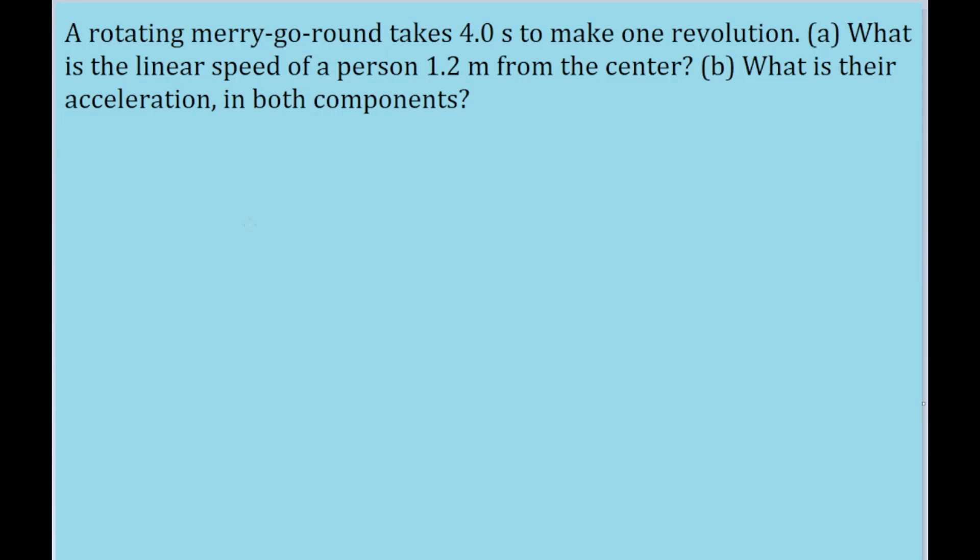Hey everyone, in this problem we're looking at a merry-go-round, and the first part of the problem asks us to find the linear or tangential speed of a person at some radial distance from the center of the merry-go-round.